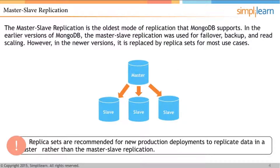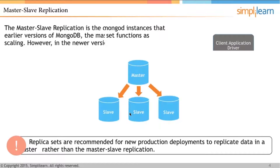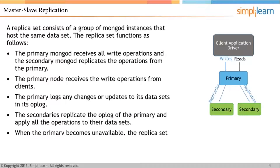You can see there is a master and a slave attached to it. Replica sets are recommended for new production deployments to replicate data faster than a master-slave architecture.